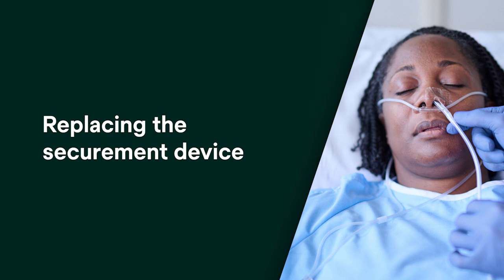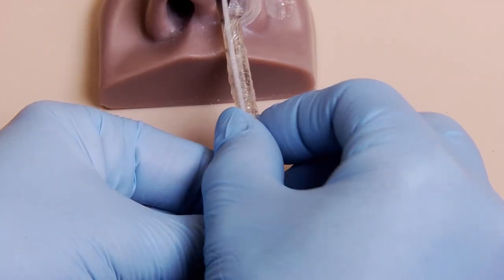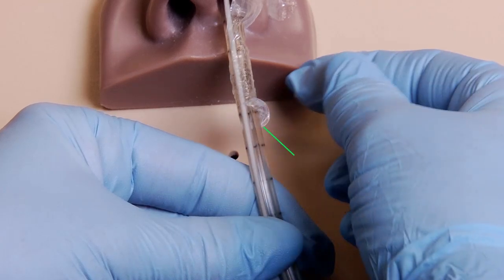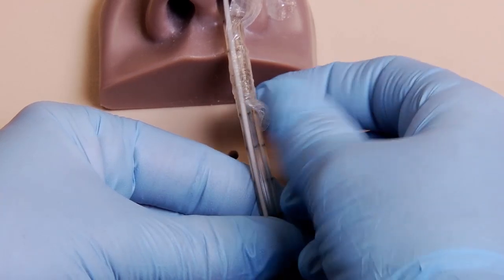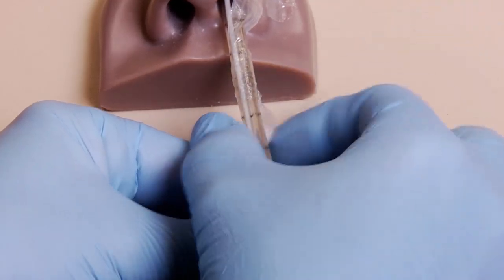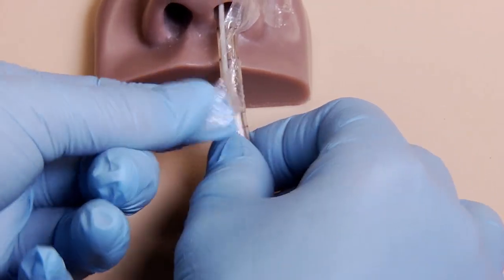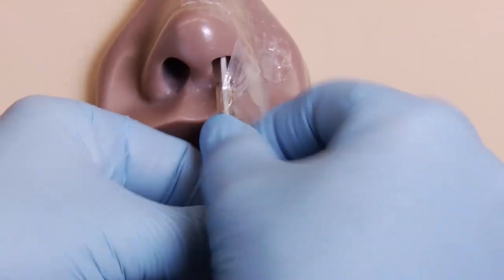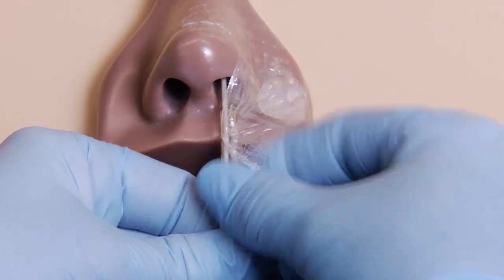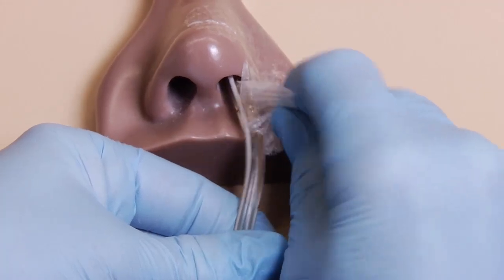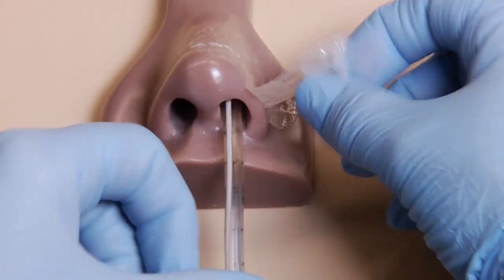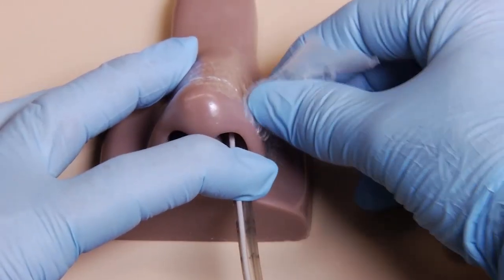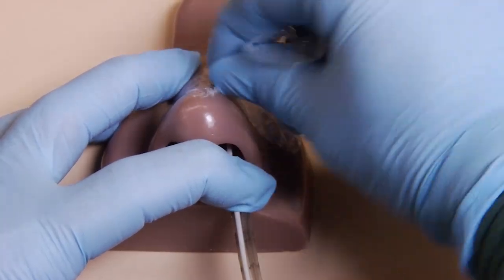Replace the device as clinically indicated or per facility protocol. Stabilize the tube, find the non-adhesive tab at the tip of the trunk and unwrap the device from the tube. While continuing to stabilize the tube, remove the top section of the device from the nose, peeling low and slow, supporting the skin.